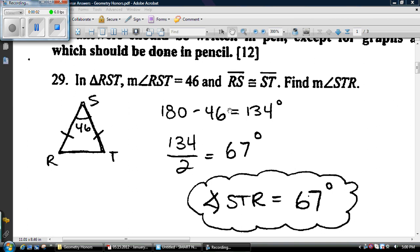Okay, we're here doing the short response section of the January 2010 Regents for geometry. Question number 29. In triangle RST, angle RST is 46 degrees. That's that angle right there, and RS is congruent to ST. That means these two angles are the same. So subtract 46 away from 180, get 134, divided by 2 because these two angles are the same. 67, that means each one of these is 67.